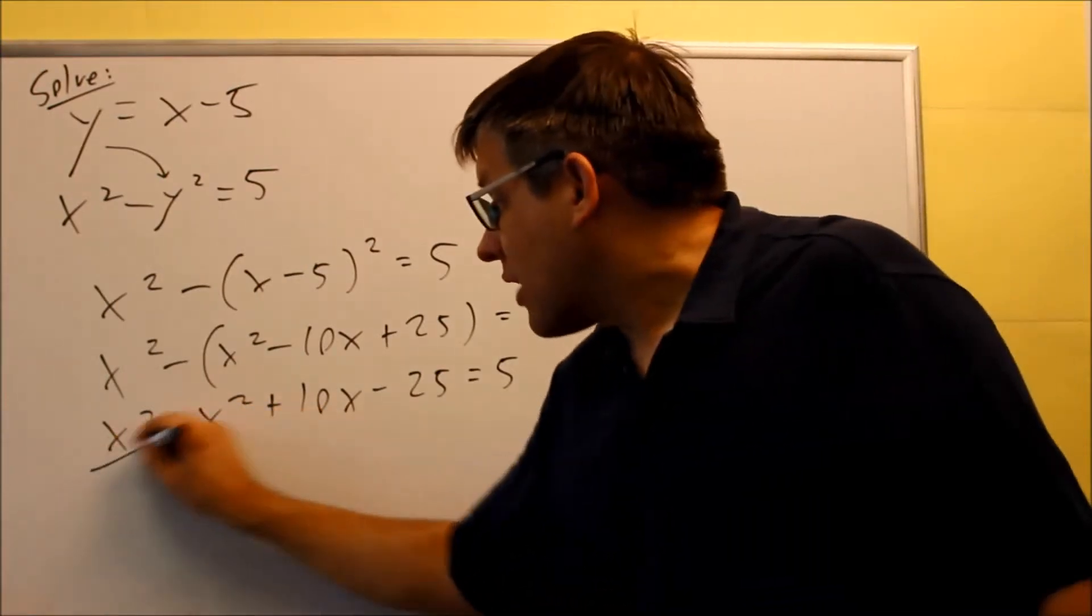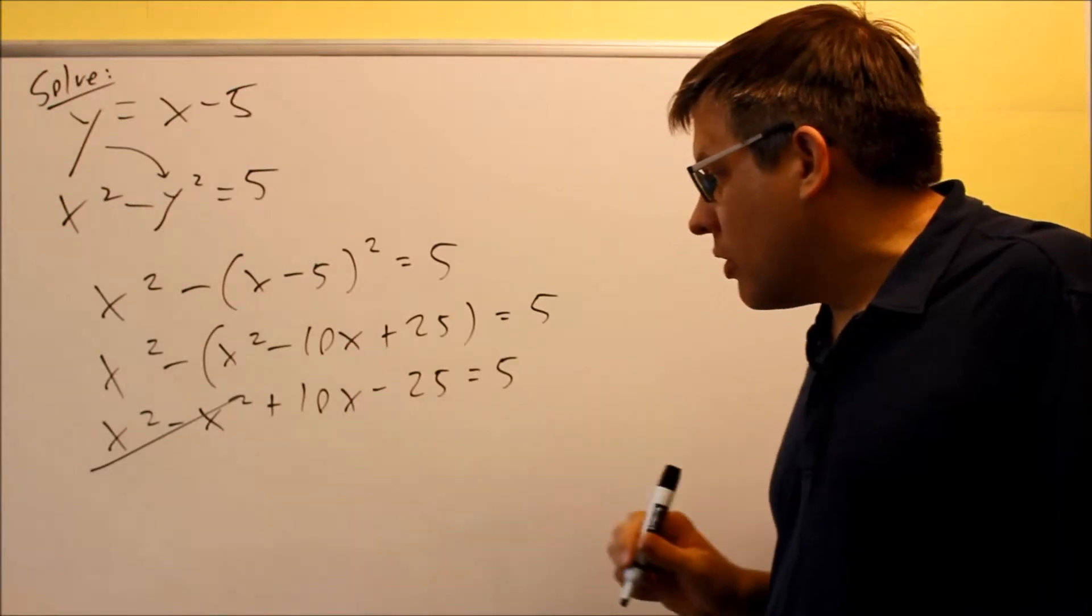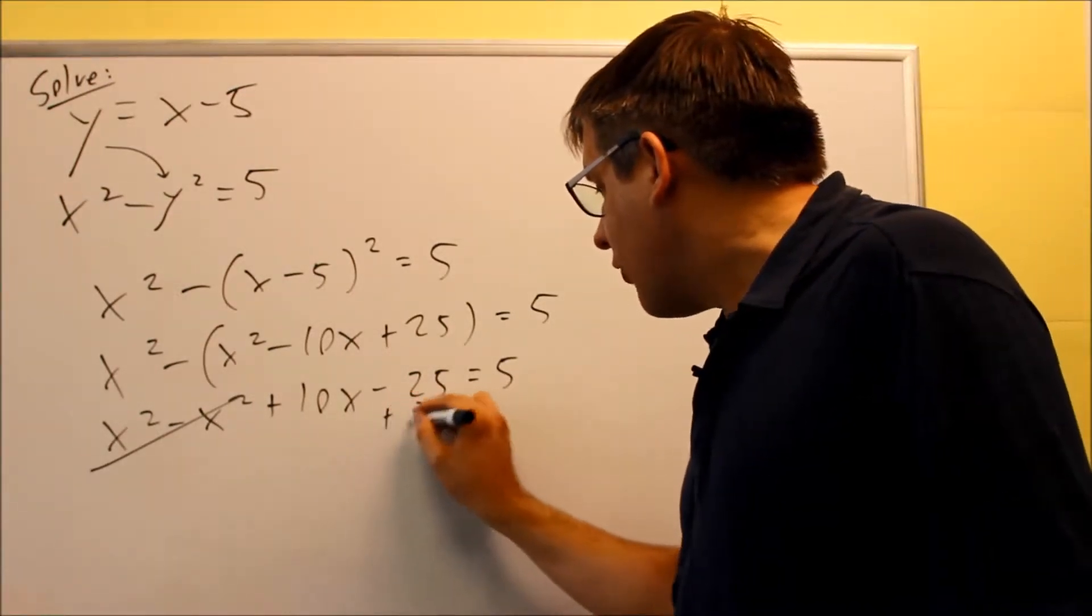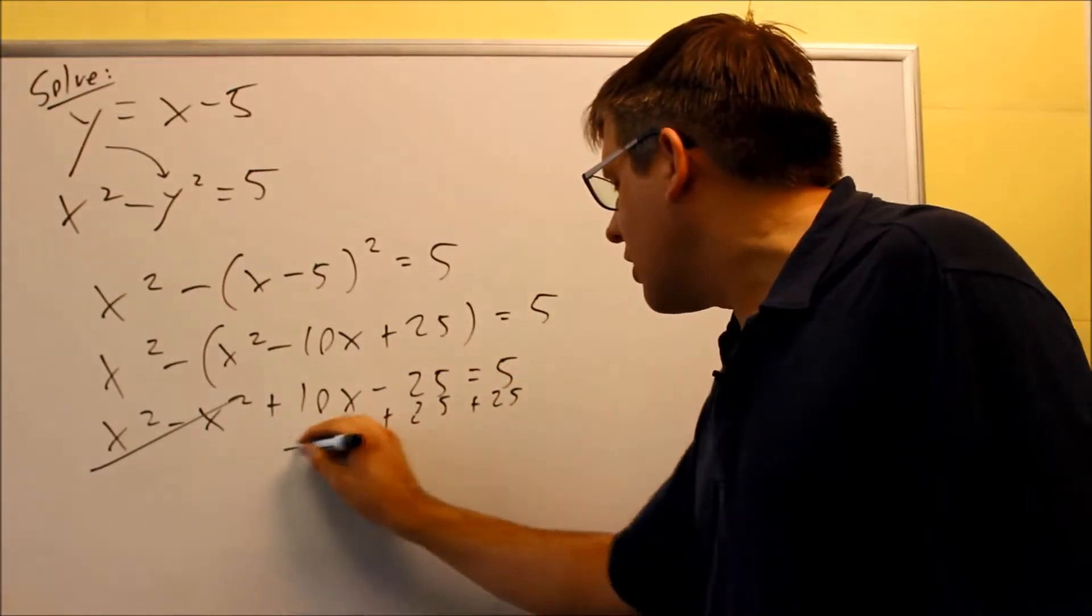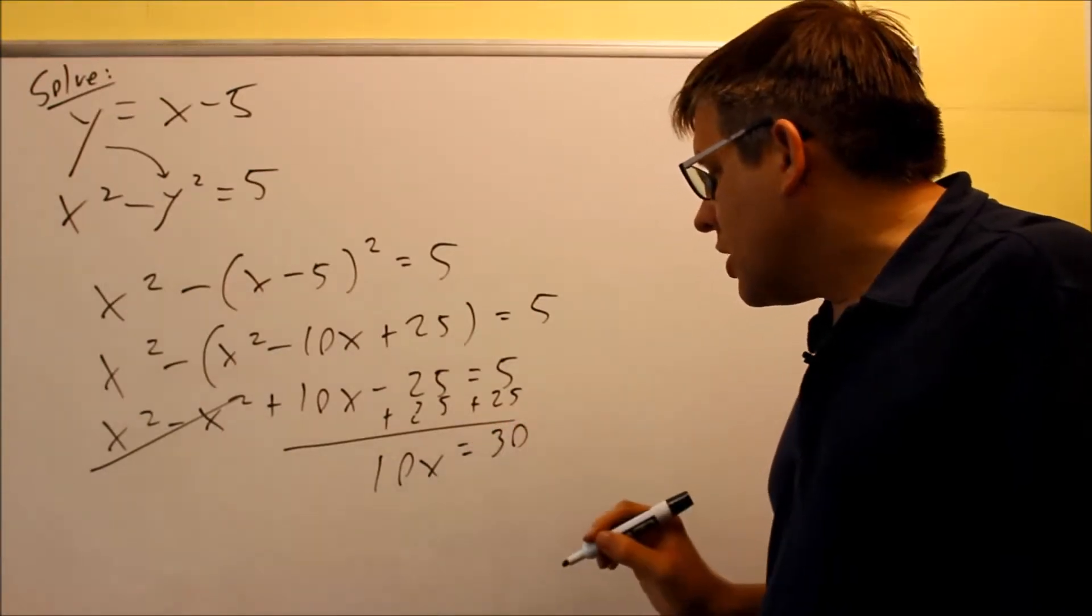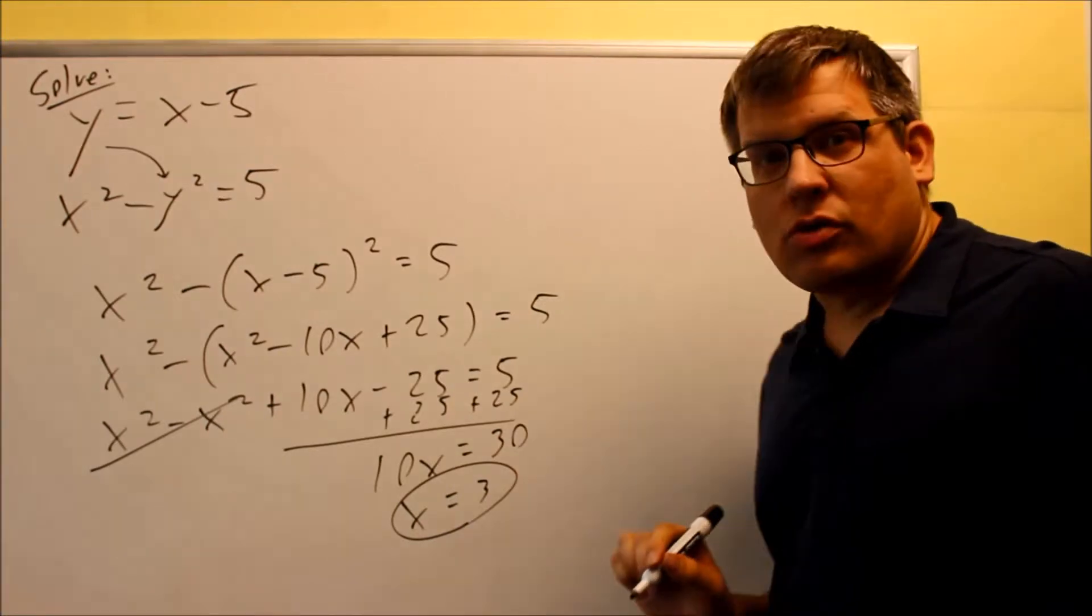In this case, the x squares are going to cancel out, and that makes it easier to solve for. Now we're just going to solve for x. You can do that by adding 25 to both sides. We get 10x is equal to 30. Divide both sides by 10, and we get our first answer. We get x is equal to 3.